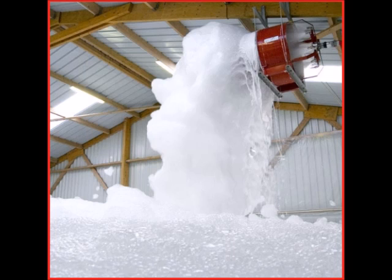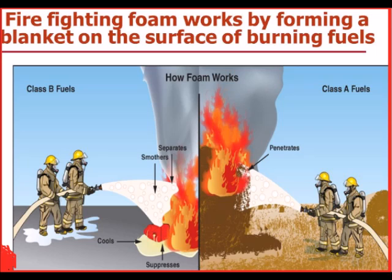Aqueous film-forming foams (AFFF) are resistant to the action of alcohols and can form a protective film. Protein foams contain natural proteins as the foaming agents. Unlike synthetic foams, protein foams are biodegradable. They flow and spread slower, but provide a foam blanket that is more heat-resistant and more durable. Protein foams include regular protein foam (P), fluoroprotein foam (FP), film-forming fluoroprotein (FFFP), alcohol-resistant fluoroprotein foam (RFP), and alcohol-resistant film-forming fluoroprotein (RFFFP). Protein foam from non-animal sources is preferred because of the possible threats of biological contaminants such as prions.